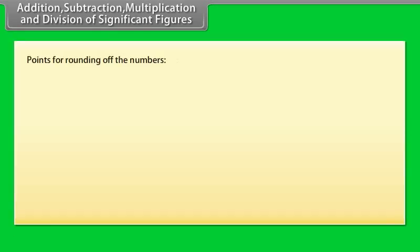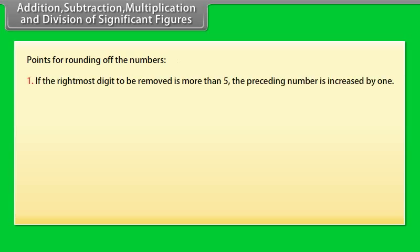Addition, subtraction, multiplication and division of significant figures. Points for rounding of the numbers: 1. If the rightmost digit to be removed is more than 5, the preceding number is increased by 1. Example: 1.386. If we have to remove 6, we have to round it to 1.39.